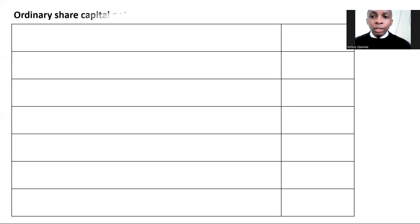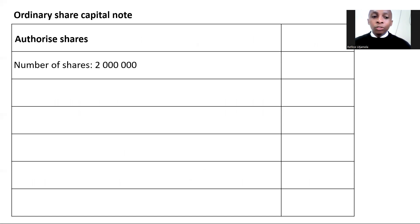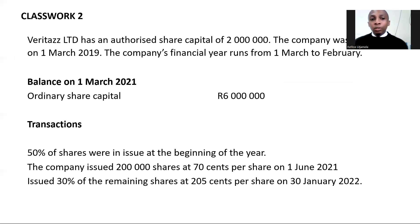I will record it in my ordinary share capital note. I'll start with authorized share capital - my authorized share capital is two million. It's just the number of shares; it is the maximum number of shares that the company may issue. These are balances on the 1st of March 2021 - we only have one balance that comes from your ordinary share capital at the beginning of the year. We have share capital worth six million, but they're not telling us how many shares were issued for us to have that share capital of six million.